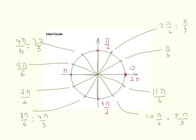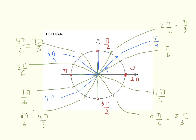We now split each quadrant into 2 equal parts. This angle, for example, is 45 degrees or pi over 4. This angle here will be twice pi over 4. Now splitting the next quadrant into 2 parts, this angle here will be 3 pi over 4, this angle here will be 4 pi over 4. This angle here will be 5 pi over 4, this will be 6 pi over 4, which is 3 pi over 2. And then the last one here will be 7 pi over 4, and then 8 pi over 4, that gives you 2 pi.